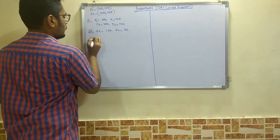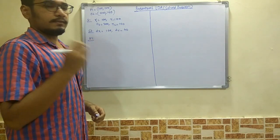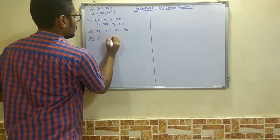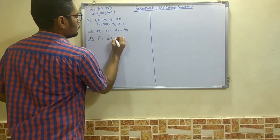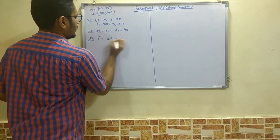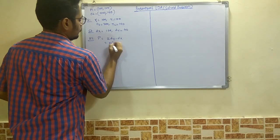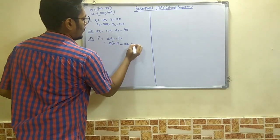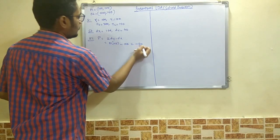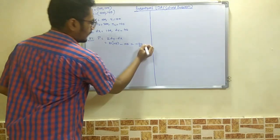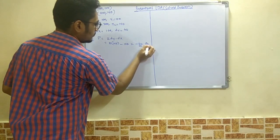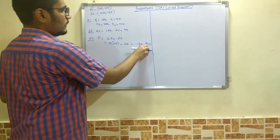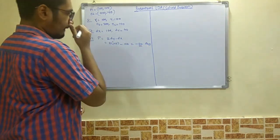Next, we calculate the initial decision parameter p_init. The formula is p = 2*dy - dx, which is 2×40 - 100 = 80 - 100 = -20. Since this value is less than 0, we note that.